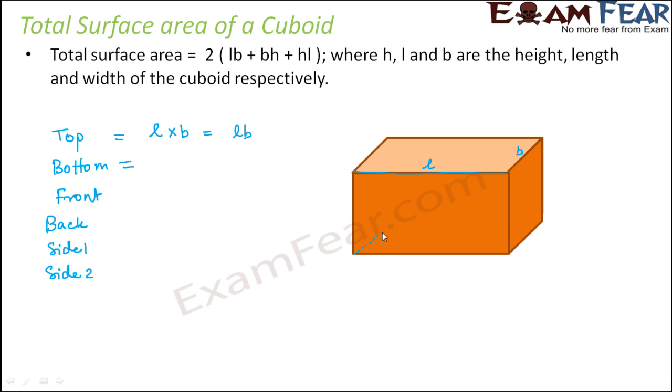What would be the area of the bottom surface? The bottom surface is not visible exactly from here, but if you try to visualize it, this is how the bottom surface would be. This would also be equal to length and breadth, so this would also be L into B.